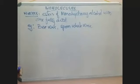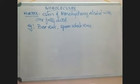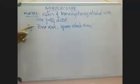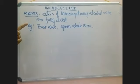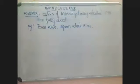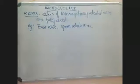Esters of monohydroxy alcohol with one fatty acid are called wax. For example, bee wax is found in honeycombs — that wax is made up of a monohydroxy alcohol. Sperm whale wax is another example; the sperm of the whale fissure is made up of a wax.